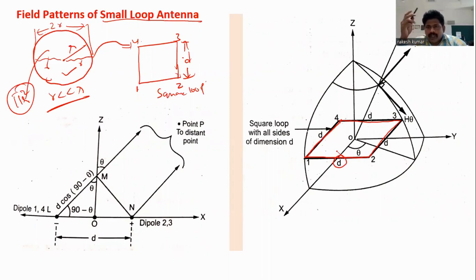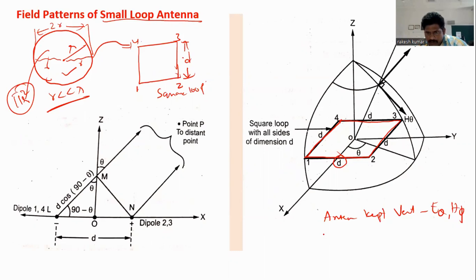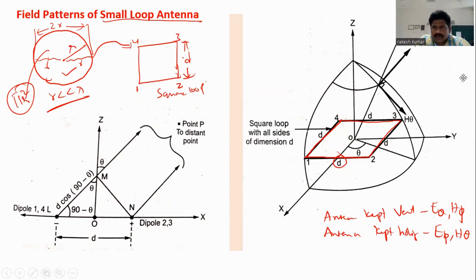Up to now, in the previous sections we have kept our antennas vertical. Whenever the antenna is kept vertical, we studied the available field components at H_phi. But here, instead of keeping my antenna vertical, I have kept my antenna horizontal. Whenever the antenna is kept horizontal, the field components are E_phi and H_theta.